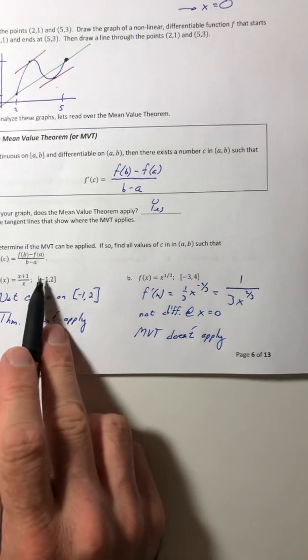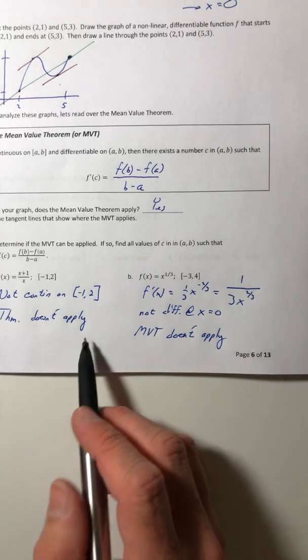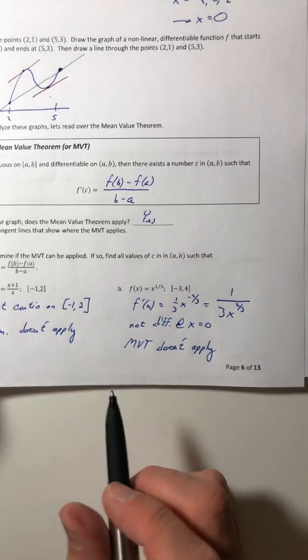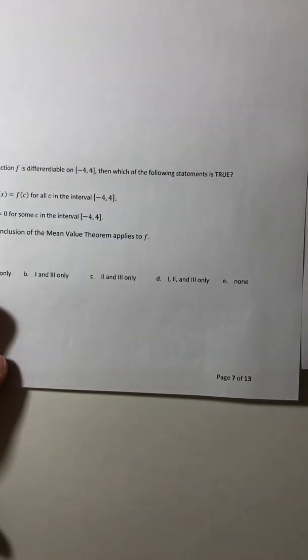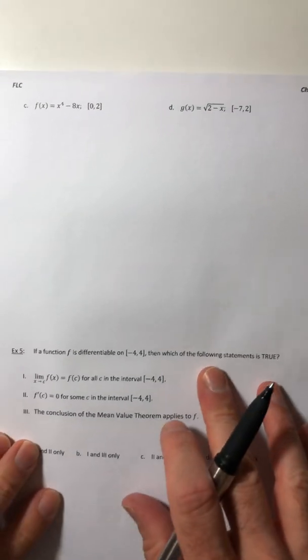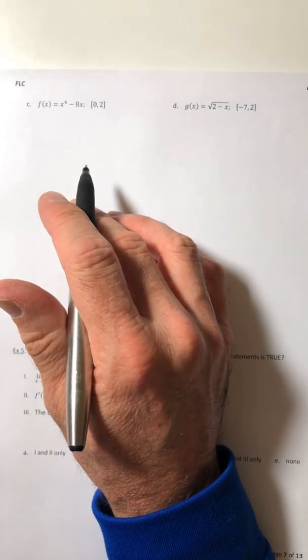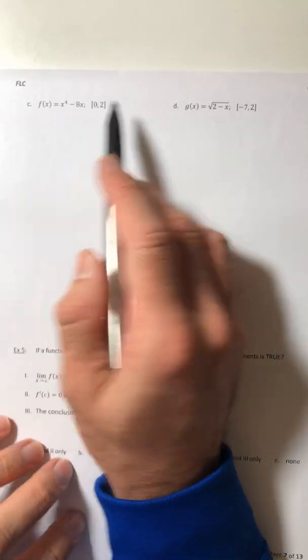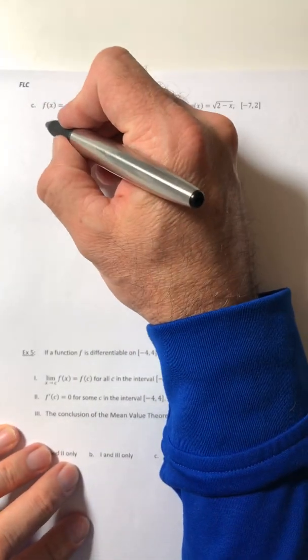Okay, so just because they say determine if you can use it, doesn't mean that it has to be used. It can be a big ol' no, it might not. Okay, part c, same type of thing. So this is a polynomial, so we know that it's continuous and differentiable.